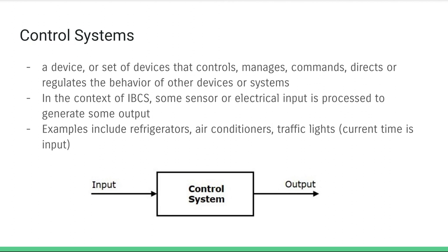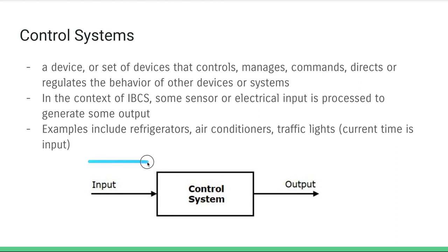The topic of Topic 7 is control systems. When we're talking about control systems, we're basically talking about a system in which there is some input, that input is processed, and there is some output. In the context of the IB Computer Science exam, we're talking about digital input from a sensor, and that digital signal is sent to a microprocessor, which is a smaller version of a computer's CPU — essentially a tiny computer. That microprocessor processes the signal and then emits some digital output, which is used to control another device.